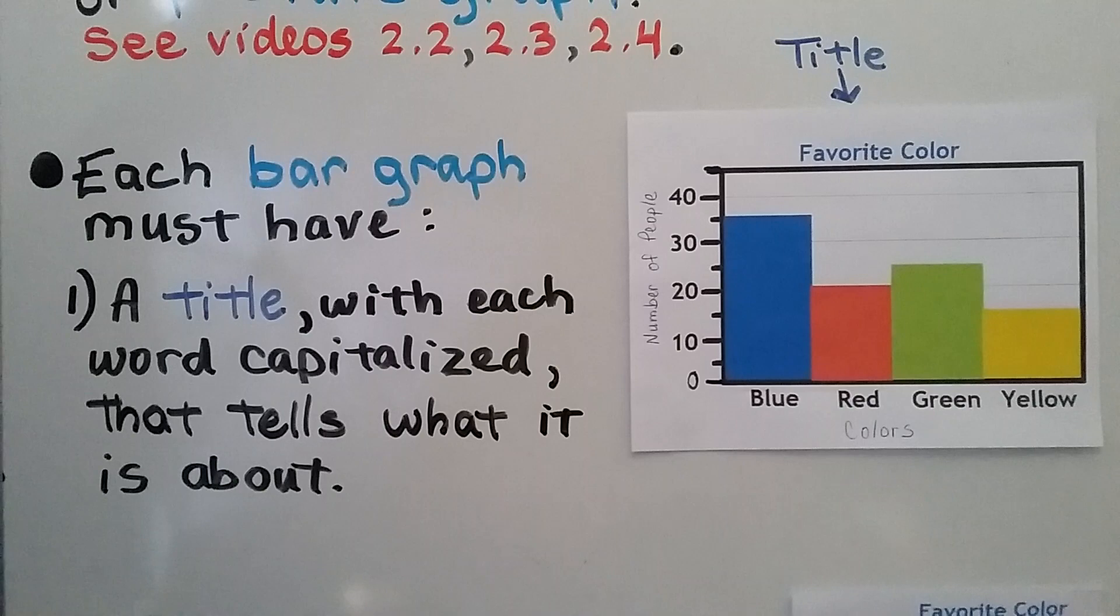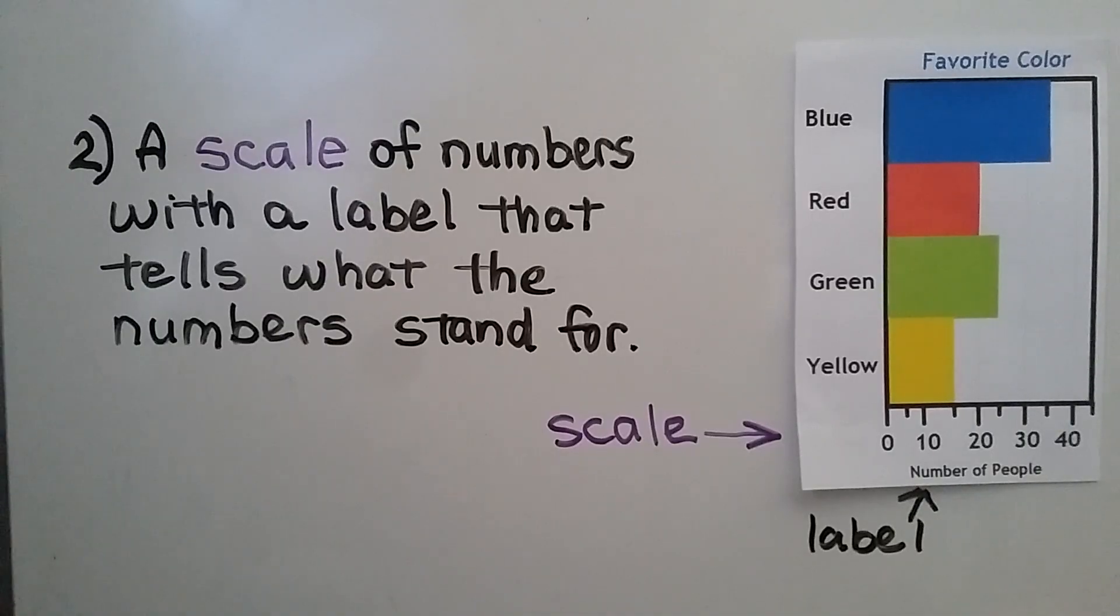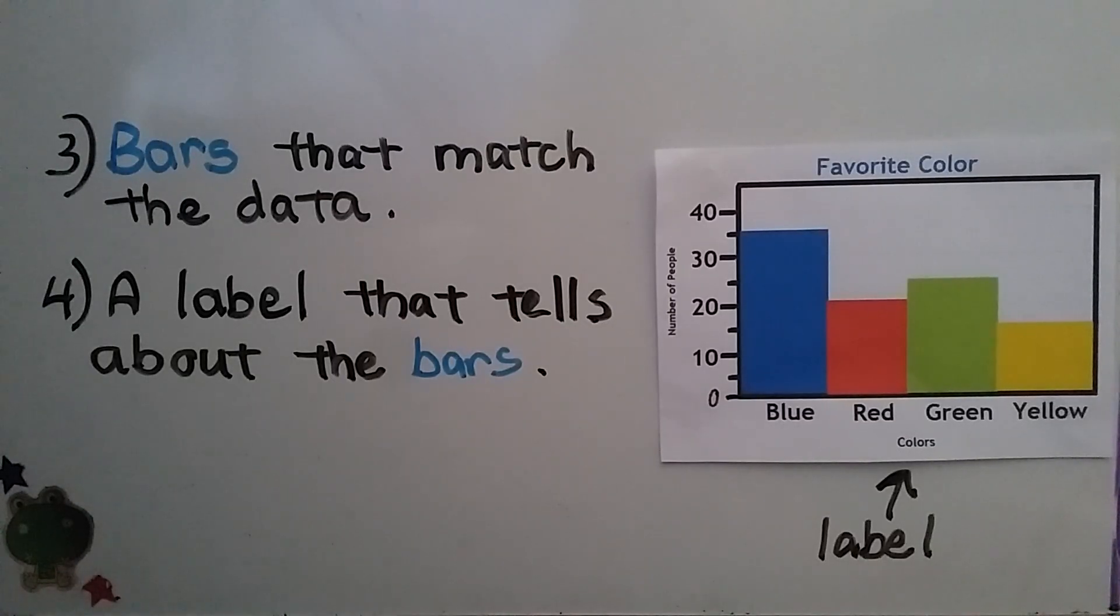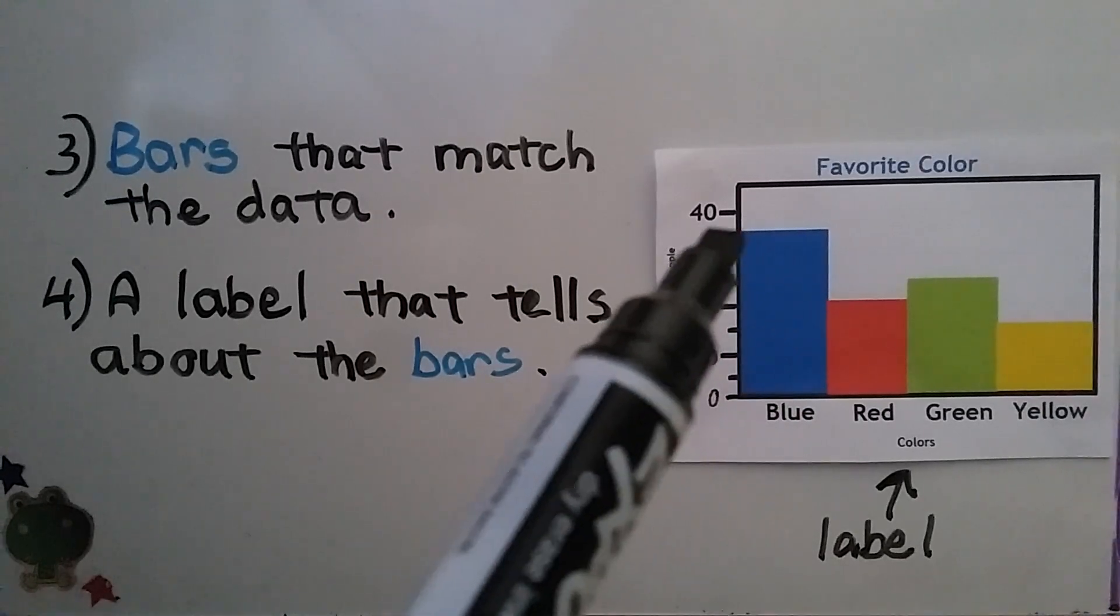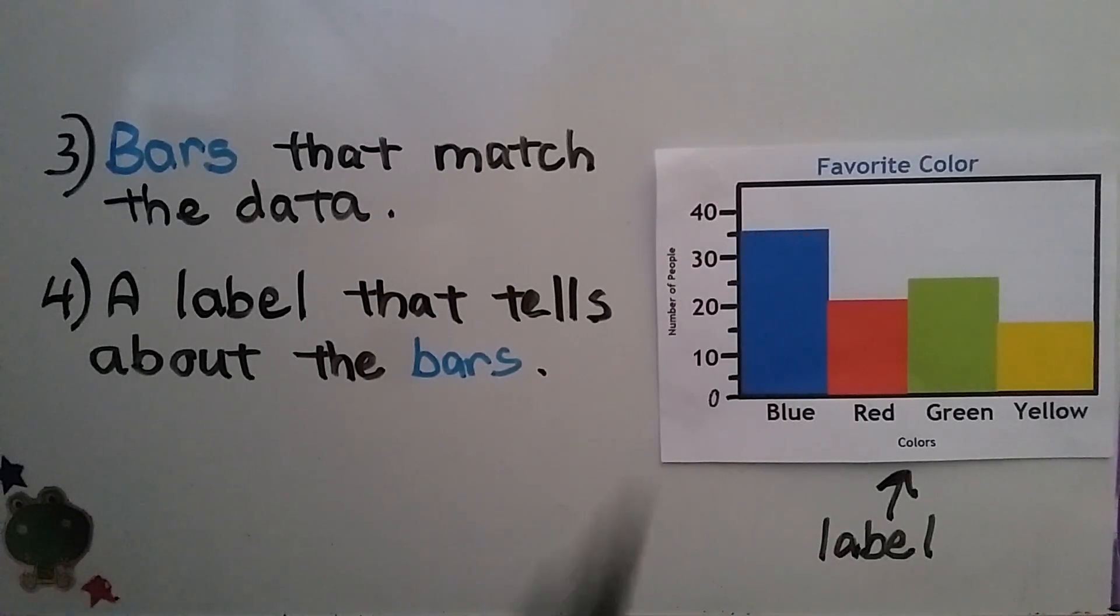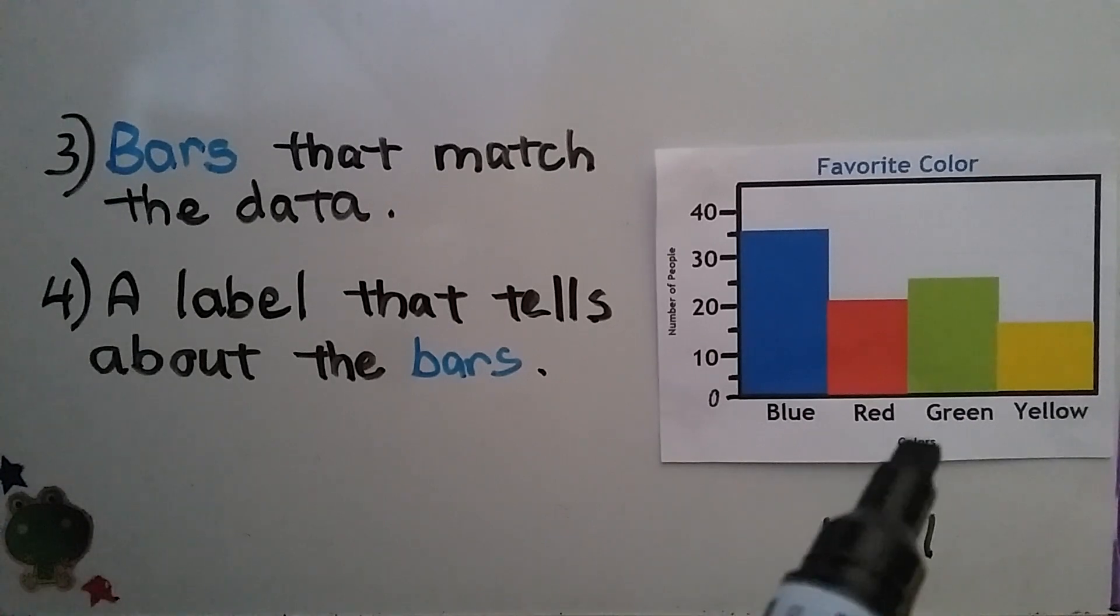There are important things that each bar graph must have. The first thing is a title with each word capitalized that tells what the bar graph is about. The bar graph should have a scale of numbers with a label that tells what the numbers stand for. Here we have our scale along the bottom labeled number of people. It must have bars that match the data. It says blue is 35, so our bar must match that data. And it needs a label that tells about the bar - see the label right here for the colors.